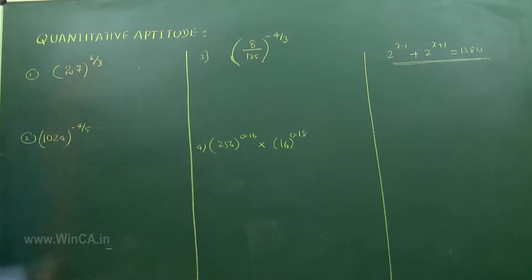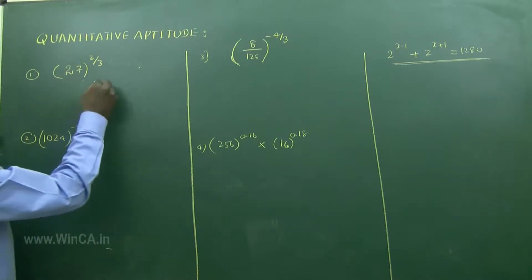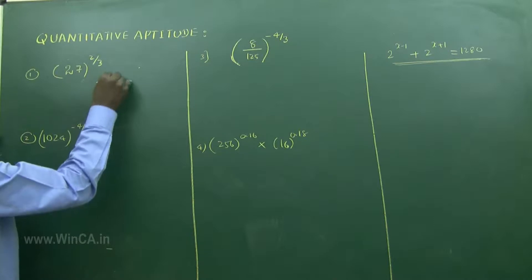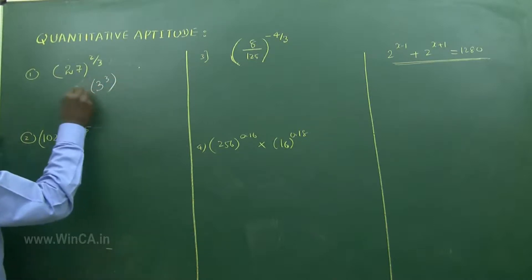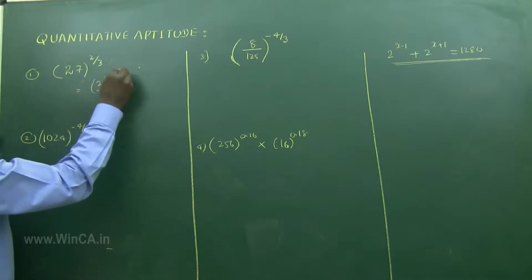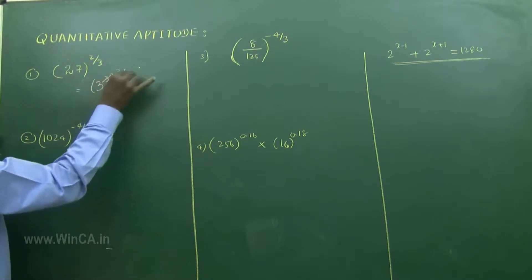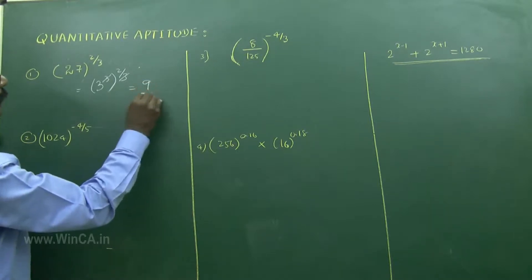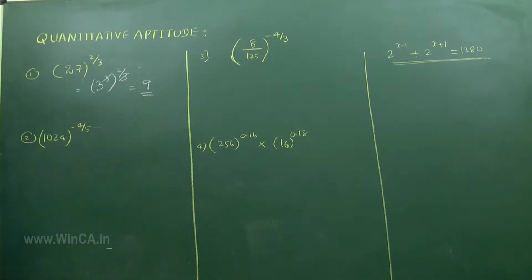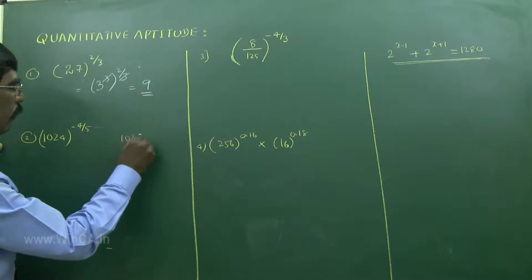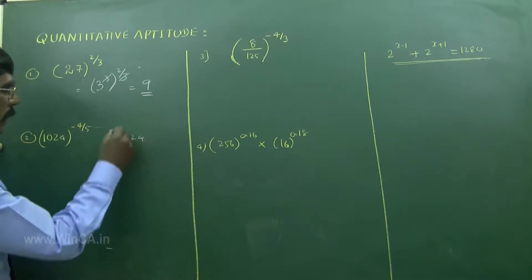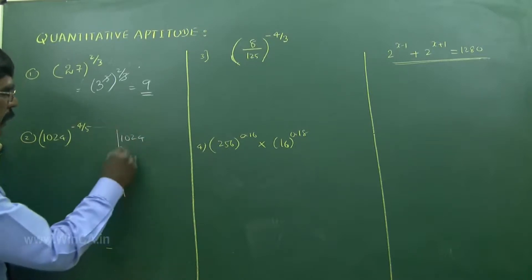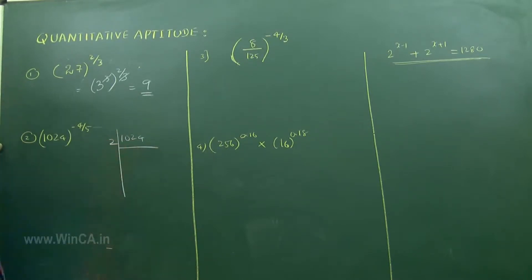27 to the power of 2 by 3 — simplify this. You can write it as 3 cube whole to the power of 2 by 3, and cancel. 3 squared is 9. That's it.